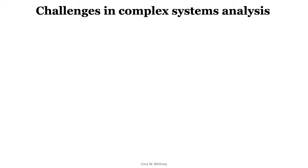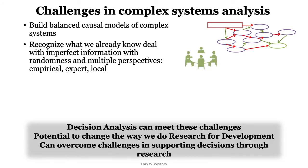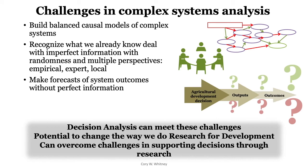That requires an understanding of complex systems and there are many challenges in this. In order to apply decision analysis tools, we need to build balanced causal models. We have to incorporate as much information as possible — by information, I mean knowledge and relationships — to understand how these systems work. We recognize what we already know, we deal with imperfect information, randomness, multiple perspectives, empirical evidence, as well as expert and local information. And we try to make forecasts of system outcomes, that is the long-term sustainability outcomes of agricultural decisions.